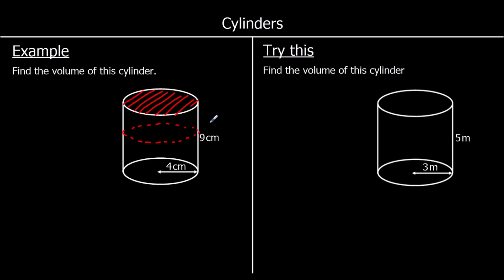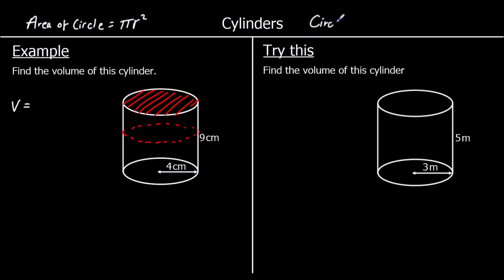To find the volume of a cylinder, we find the area of the circle — the area of the cross section — times how far back it goes, the area of the circle times the height. The area of a circle is pi times the radius squared, pi r squared, and the circumference of a circle is either pi times d, pi times diameter, or 2 times pi times radius. So the volume of the cylinder is pi r squared times the height, h. So the volume of a cylinder is pi r squared h.